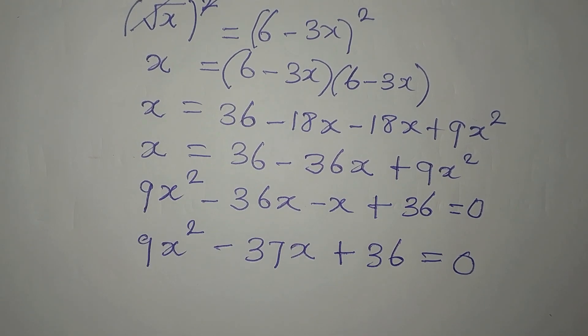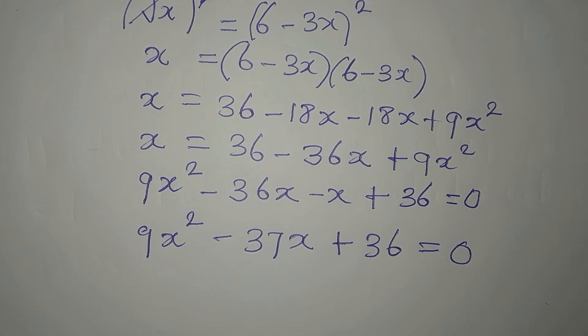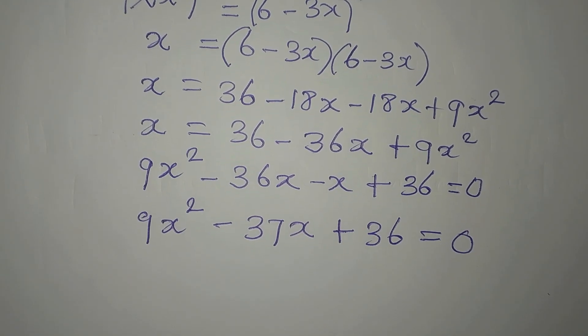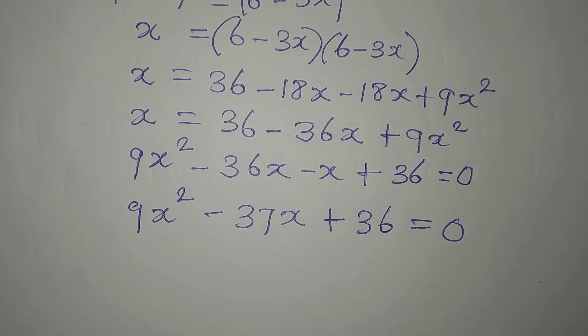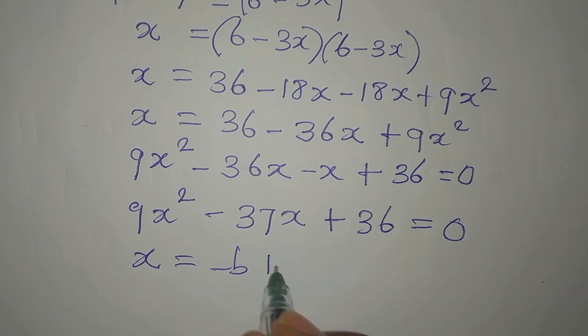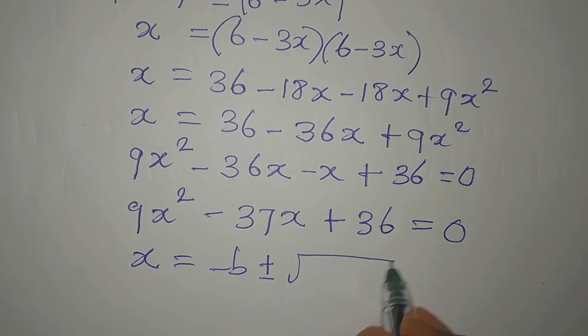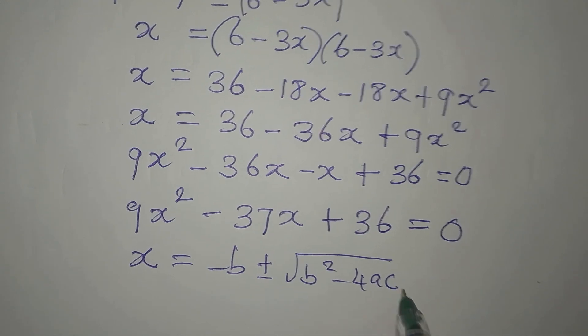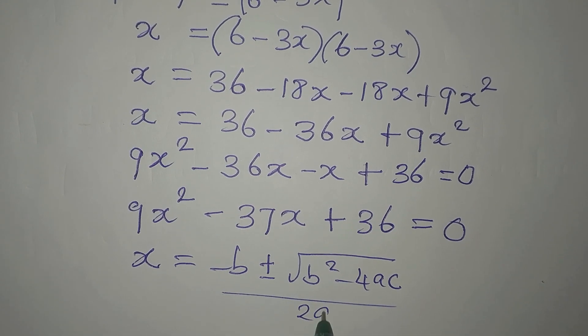Okay, stop thinking whether you'll be able to factorize because it may not be easy. Now, let's use the formula method. Our x is minus b plus and minus square root of b squared minus 4ac all over 2a.